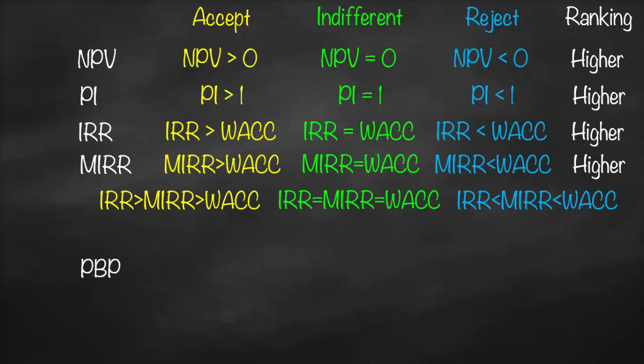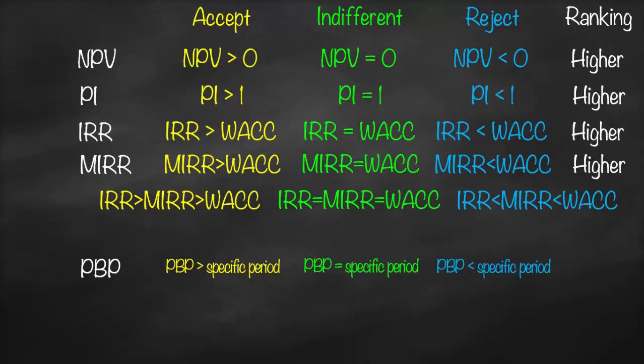Then we have Payback Period. This is considered a subjective measure because I need to ask each investor how long they would like to get their money back. Some investors say one year, others say five, seven, ten, or even twenty years. Therefore I compare my payback period against a specific period: accept if payback period is greater than the specific period, indifferent if equal, and reject if lower. For mutually exclusive projects, the shorter payback period is always better.